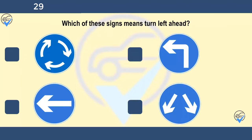Which of these signs means turn left ahead? Blue circles tell you what you must do, and this sign gives a clear instruction to turn left ahead. You should be looking out for signs at all times and know what they mean.